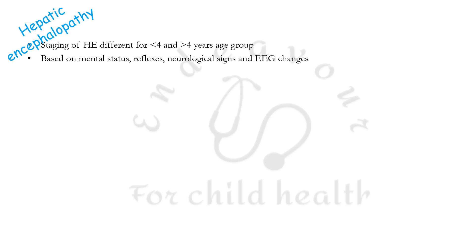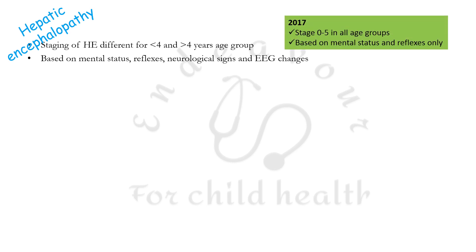Hepatic encephalopathy staging has been differentiated into two age groups — less than four years and more than four years — and is now based on four parameters: mental status, reflexes, neurological signs, and EEG changes. This is in contrast to the 2017 guidelines, where staging was from zero to five across all age groups and was based only on two criteria: mental status and reflexes.